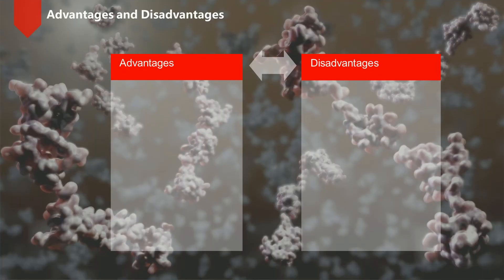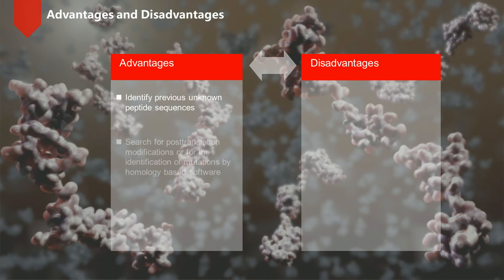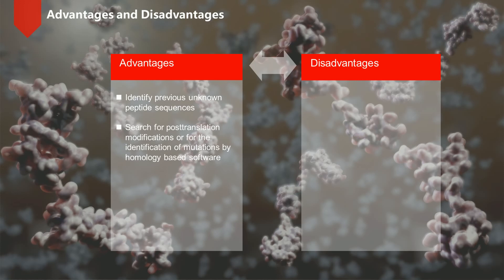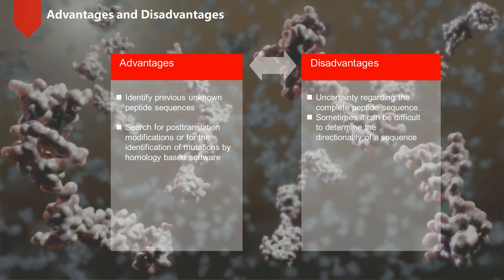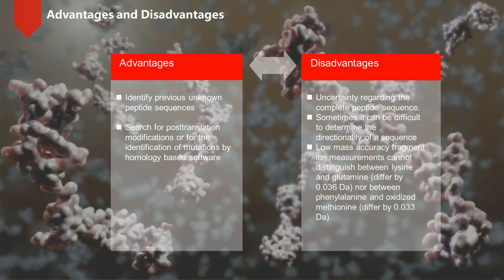De novo sequencing can identify previously unknown peptide sequences. In addition, it can search for post-translational modifications or for identification of mutations by homology-based software. However, de novo sequencing will not be able to derive a complete sequence, or will have uncertainty in a portion of the derived sequence. Sometimes it can be difficult to determine the directionality of a sequence. Low mass accuracy fragment ion measurements cannot distinguish between lysine and glutamine, nor between phenylalanine and oxidized methionine.